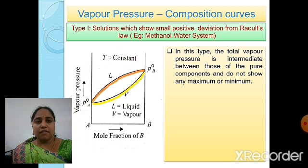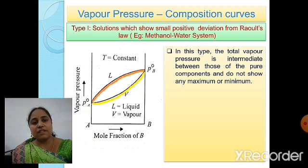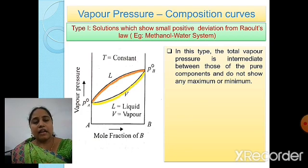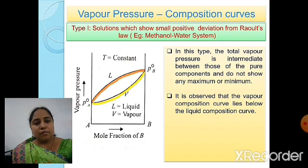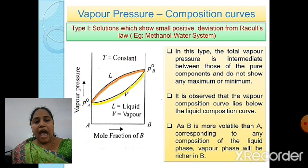In Type 1, the total vapor pressure is intermediate between those of the pure components and does not show any maximum or minimum. Recalling Raoult's law, we would observe only the L-curve showing positive deviation, but here we are discussing vapor pressure-composition curves where the extra yellow V-curve is added. It is observed that the vapor composition curve lies below the liquid composition curve. As B is more volatile than A, corresponding to any composition of the liquid phase, the vapor phase will be richer in B.